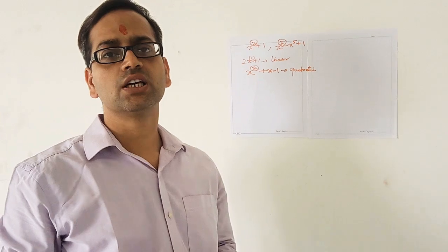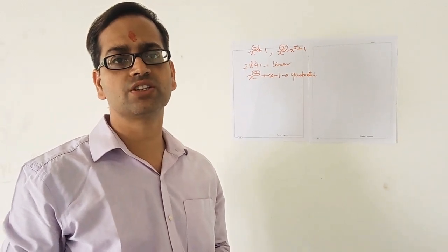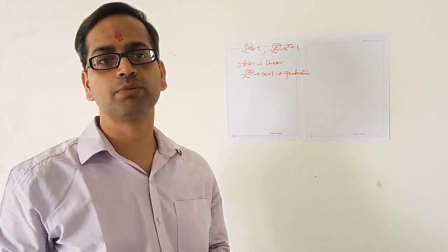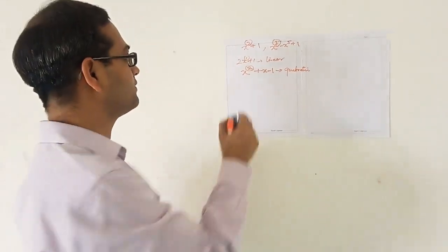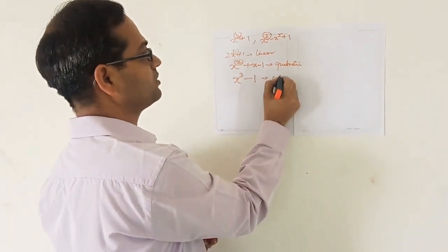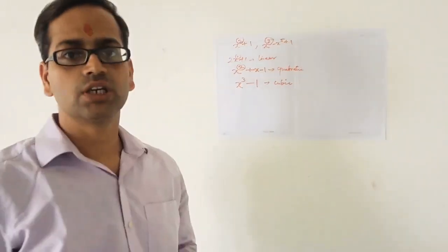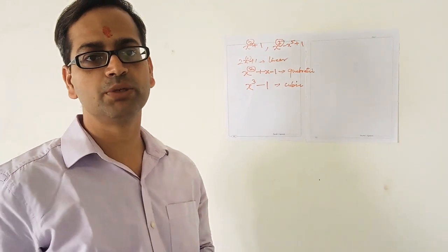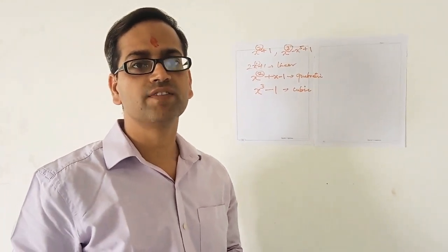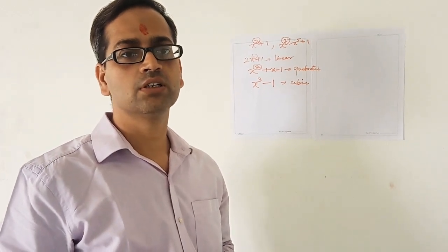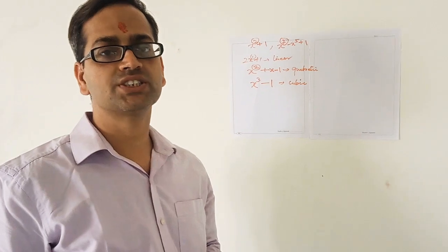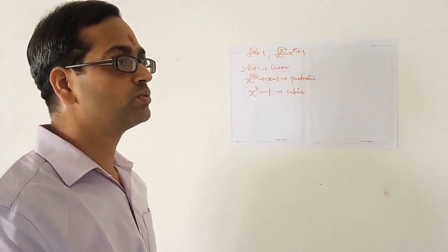Similarly, if the degree of the polynomial is 3, it is called a cubic polynomial. An example of a cubic polynomial is x³ - 1. So to summarize: if the degree is 1 it is linear, if the degree is 2 it is quadratic, and if the degree is 3 it is a cubic polynomial.